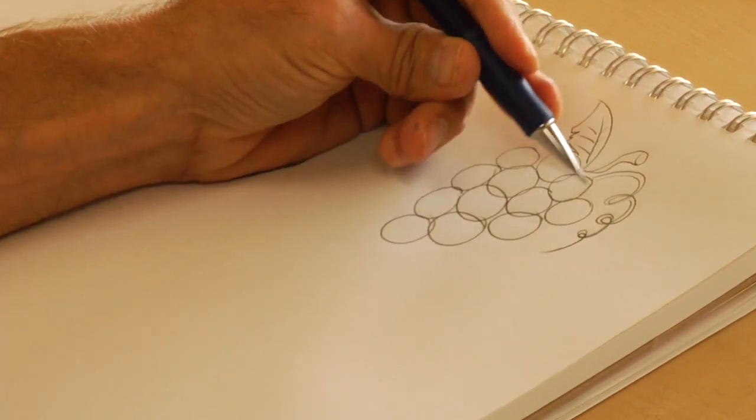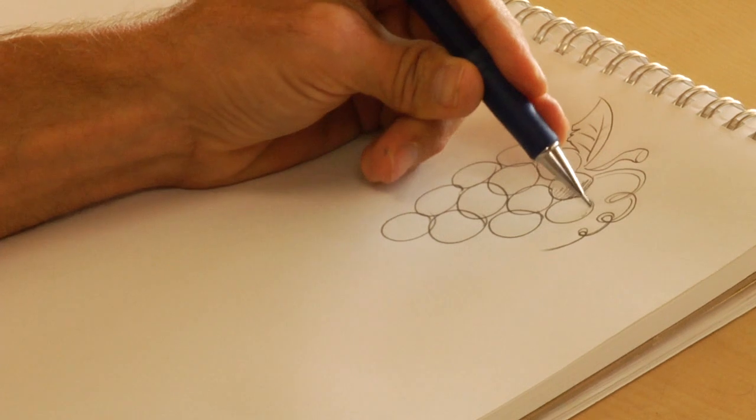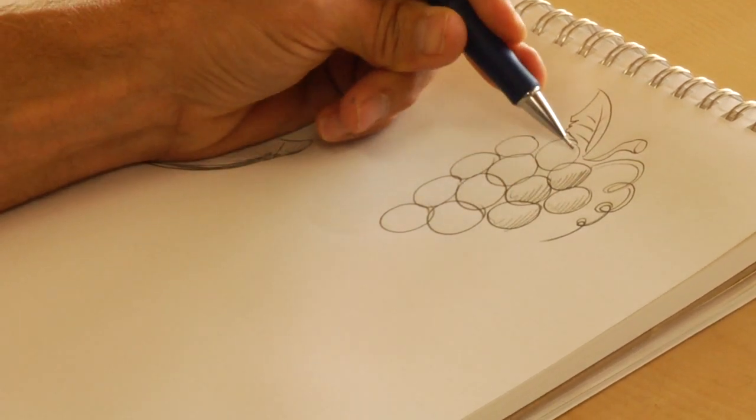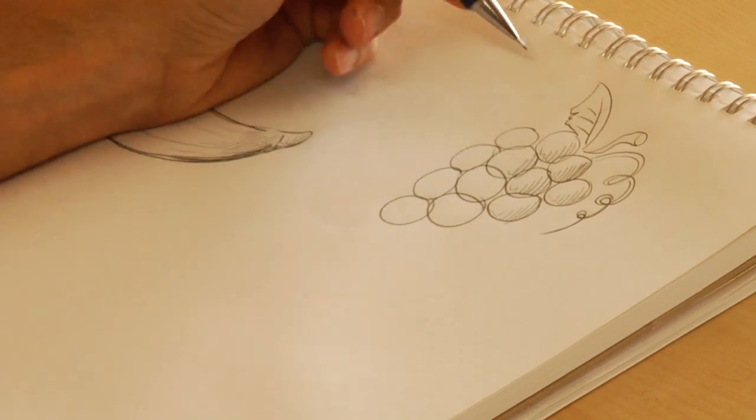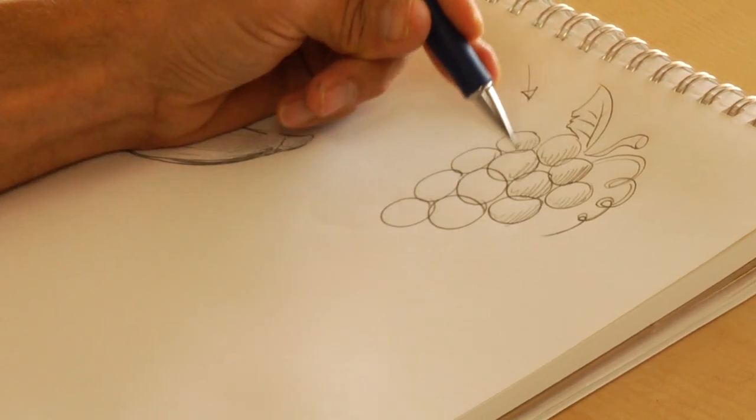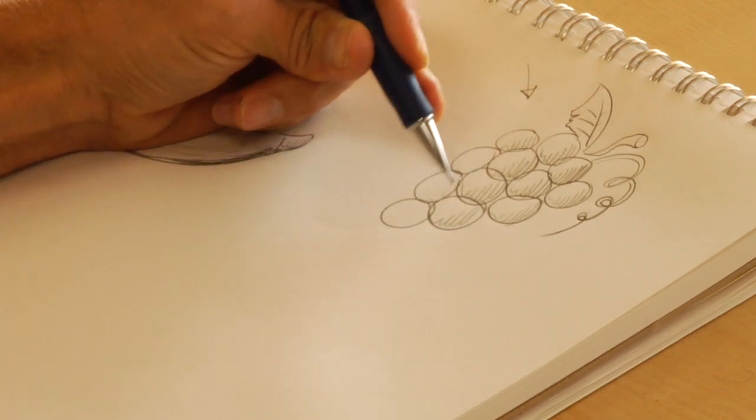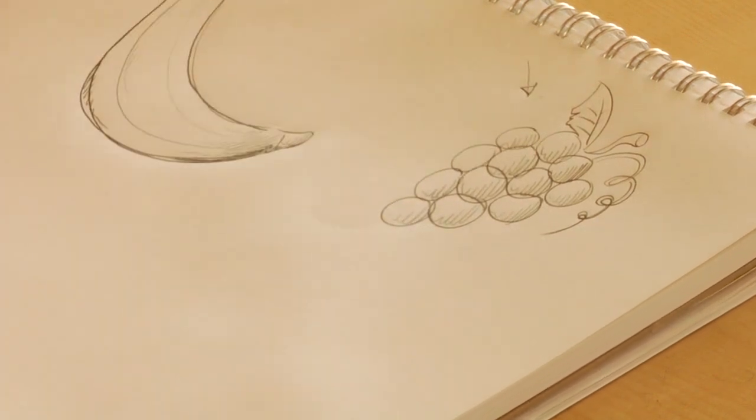Okay, and then you can come in if you want a little more complicated, and shade just one side, pick yourself a light source, and just shade one side of these grapes. Okay, and that's a grape.